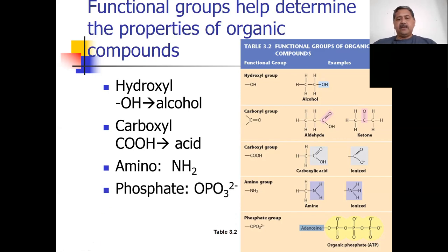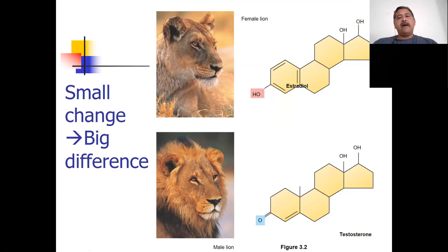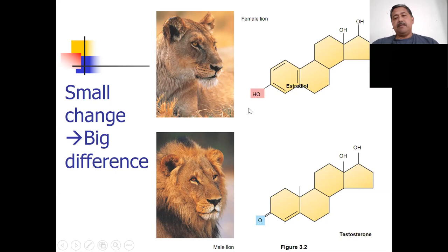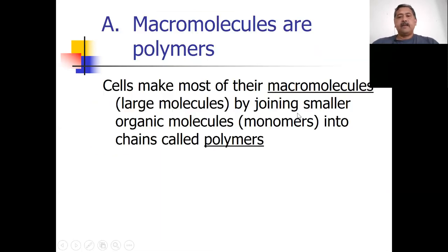Functional groups can make a big difference. Just losing one hydrogen changes estradiol to testosterone. Testosterone is a male hormone; estradiol is a major female hormone. As you can imagine, hormones in other animals have similar effects as they do in people, resulting in all kinds of secondary characteristics. So organic molecules are large molecules — they're macromolecules. 'Macro' means large, and a molecule is the basic chemical structure.